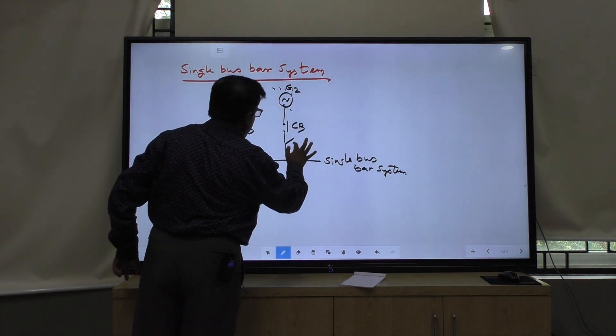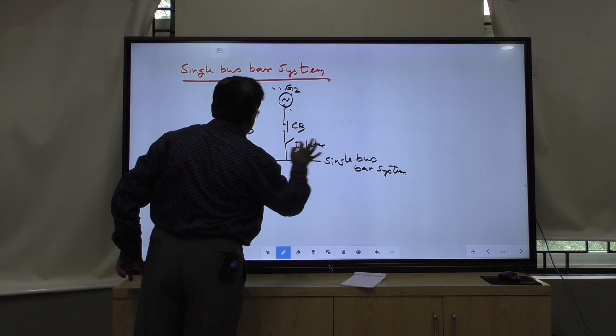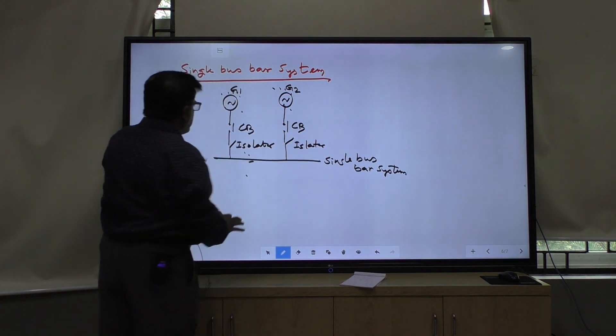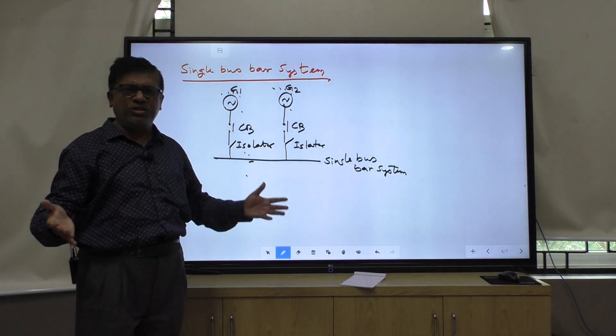This is your circuit breaker. This is your isolator. Circuit breaker is a switch. Isolator is also a switch.